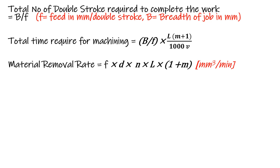The material removal rate refers to the volume of material removed within one minute. The equation is MRR = f × d × n × L(1+m), where f is feed in mm per double stroke, d is depth of cut in mm, n is rpm (double strokes per minute), L is stroke length, and m is the ratio of return stroke to cutting stroke. The unit is mm³ per minute.